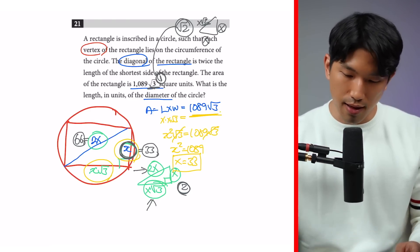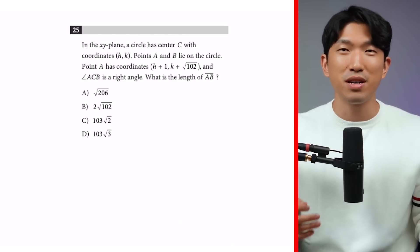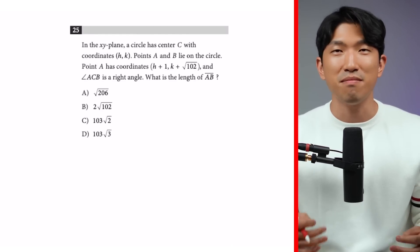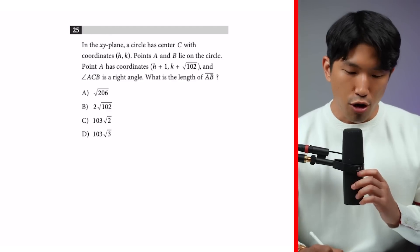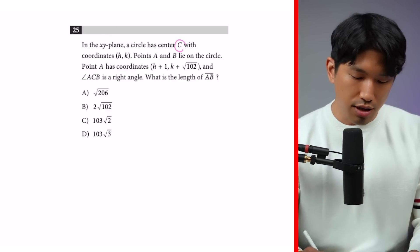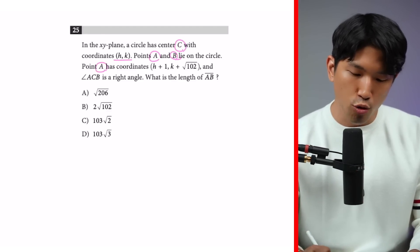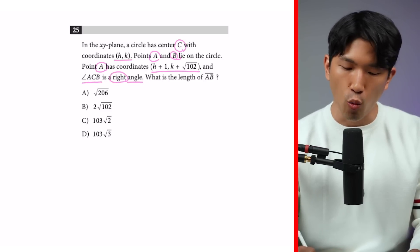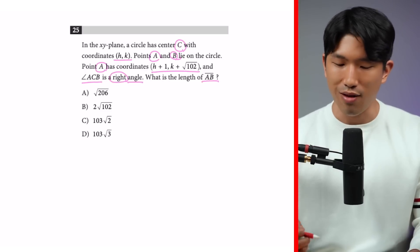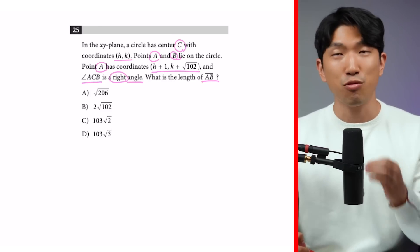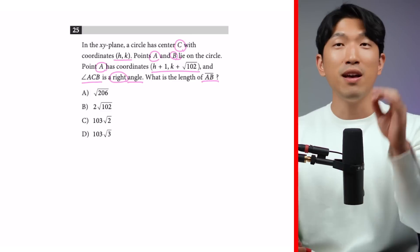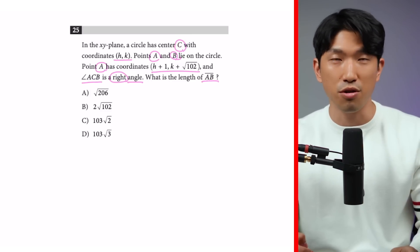Let's go to the third and final question. This one's a little rough, but it's just SAT — nothing you can't handle. Number three: in the XY plane, a circle has center C at coordinates H and K. Point A lies on the circle with coordinates H plus 1 and K plus radical 102. Angle ACB is a right angle. What is the length of AB? Sounds complicated — so what do you do? Visualize what the question is telling you.